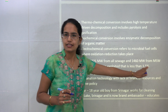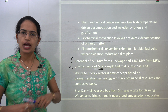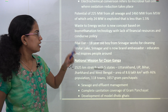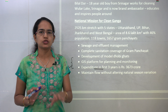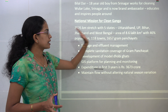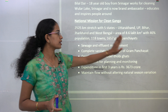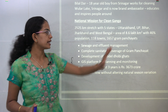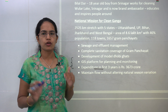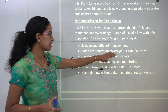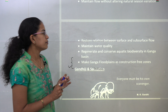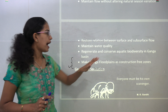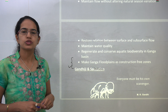Waste to energy is being pursued under four heads: first, thermal conversion involving high temperature; second, thermochemical conversion involving high temperature and decomposition, including pyrolysis and gasification; third, biochemical conversion involving enzyme reactions; and fourth, electrochemical conversion involving oxidation-reduction. Currently, we have a total potential of 1,460 megawatts from solid waste and around 225 megawatts from sewerage, of which we are actually exploiting only 24 megawatts — less than 1.5% of what could be used.